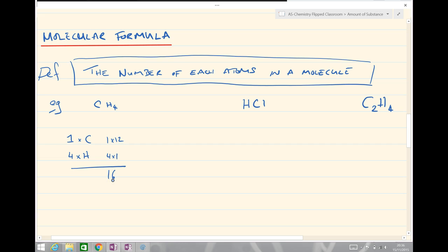In this case HCl, how many of each? Nice and easy. One hydrogen, one chlorine. Could also work out the molecular mass there, 36.5 grams per mole.